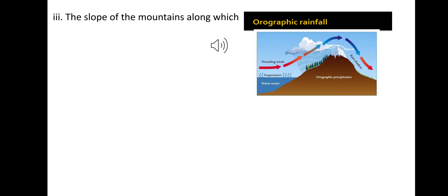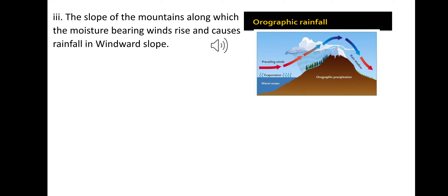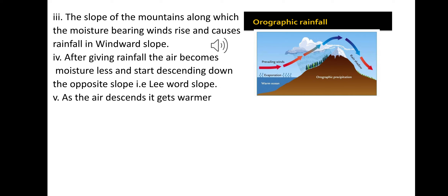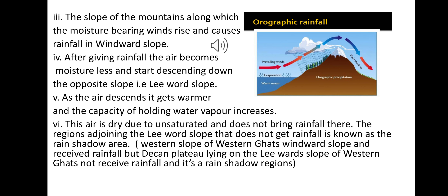In orographic rainfall, the slope of the mountain along which moisture-bearing winds rise causes rainfall on the windward slope. After giving rainfall, the air becomes moisture-less and starts descending down the opposite slope, that is the leeward slope. As the air descends, it grows warmer and its capacity for holding water vapour increases. This air is dry and unsaturated and does not bring rainfall. The regions adjoining the leeward slope that don't receive rainfall are known as rain shadow areas.